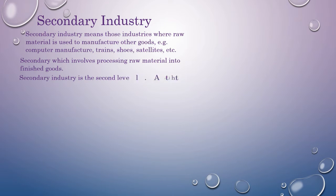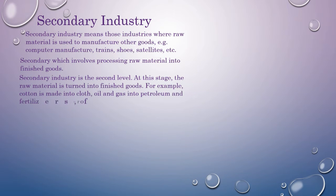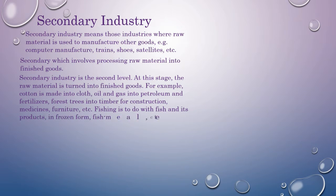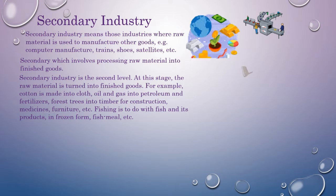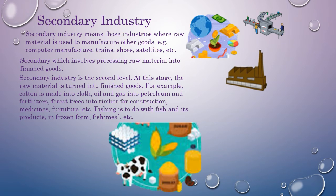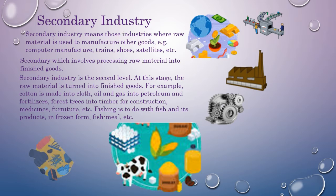Secondary Industry involves processing raw material into finished goods. This is the second level where raw material is turned into finished goods. For example: cotton is made into cloth; oil and gas into petroleum and fertilizers; forest trees into timber for construction, medicines, furniture, etc.